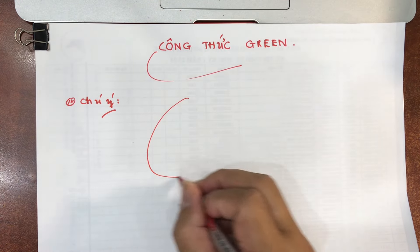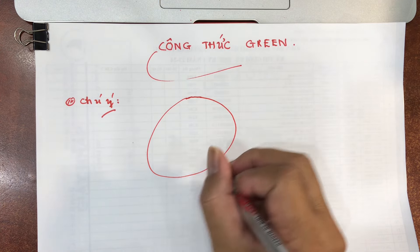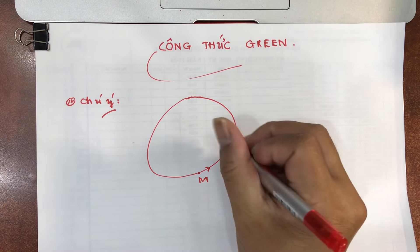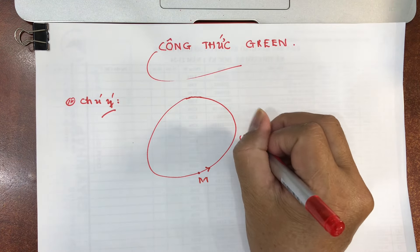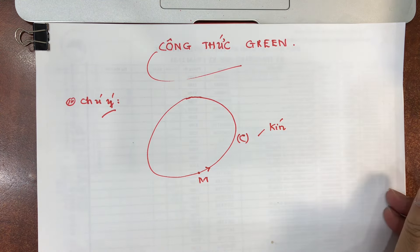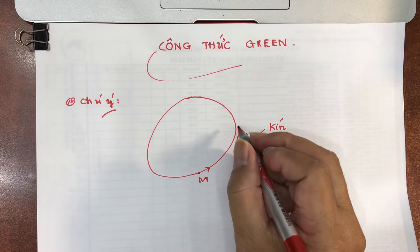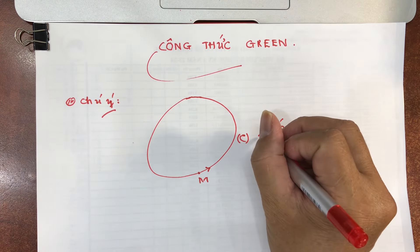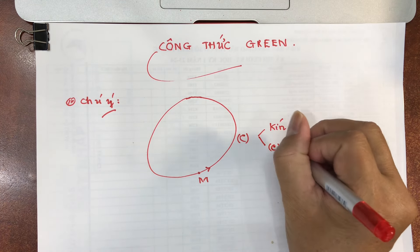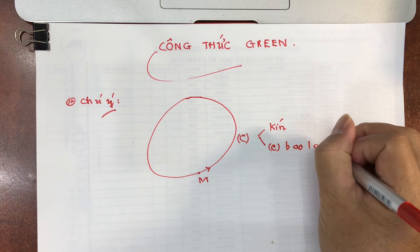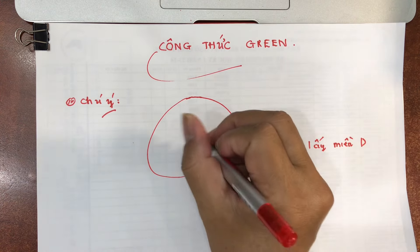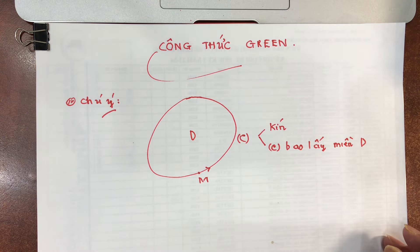Bây giờ vấn đề đặt ra như thế này. Giả sử có một chất điểm M. Chất điểm M này chuyển động dọc theo đường cong C. Đường cong C này có đặc điểm là đường cong kín, có nghĩa là điểm đầu với điểm cuối trùng nhau. Và đường cong kín này bao lấy một miền D. Miền D là miền được bao bởi đường cong kín C.